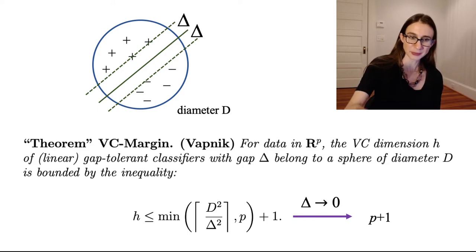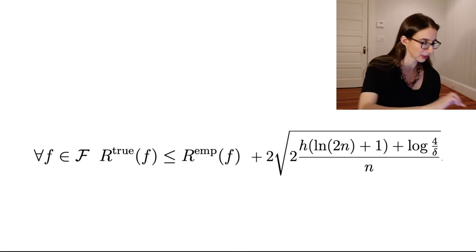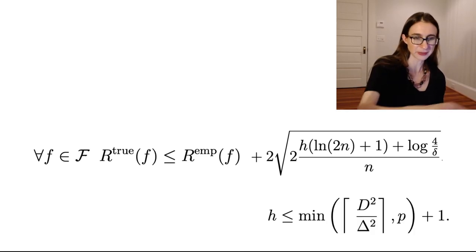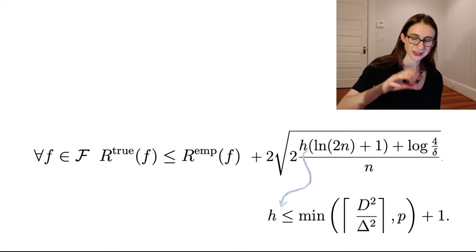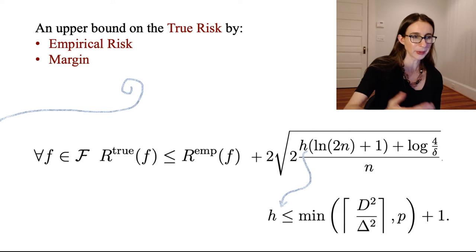So if you take this and put it into the VC bound here - I'm upper bounding the VC dimension by this quantity for these gap-tolerant classifiers - then what you get is essentially an upper bound on the true risk by empirical risk and margin.